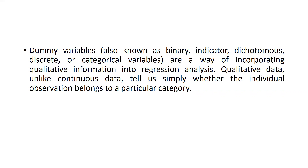Dummy variables can be called binary, indicator, dichotomous, discrete, or categorical variables — it is not just about gender. It's about other factors also. For example, four categories of age, four categories of income, or the status of married or unmarried. These are ways of incorporating qualitative information into regression analysis. Unlike continuous data, qualitative data simply tells us whether the individual observation belongs to a particular category.